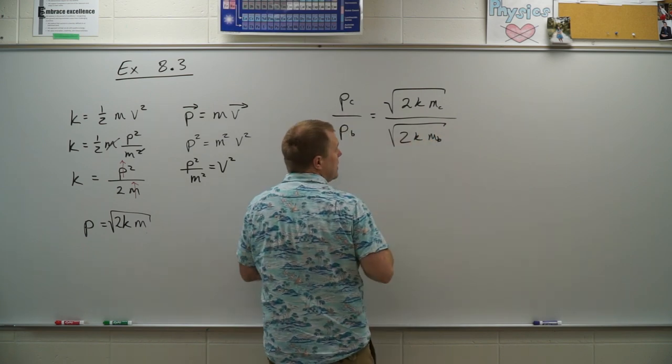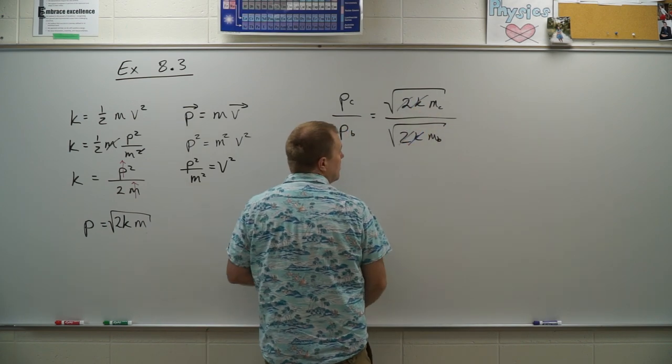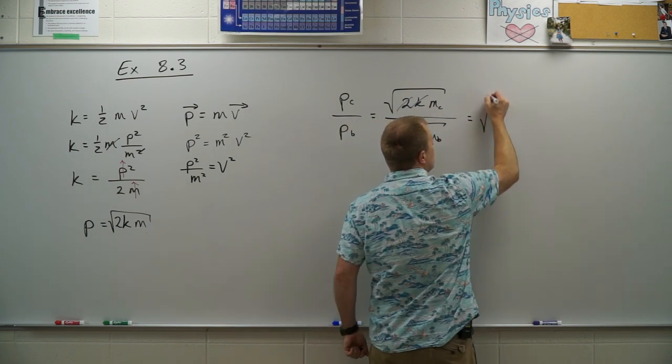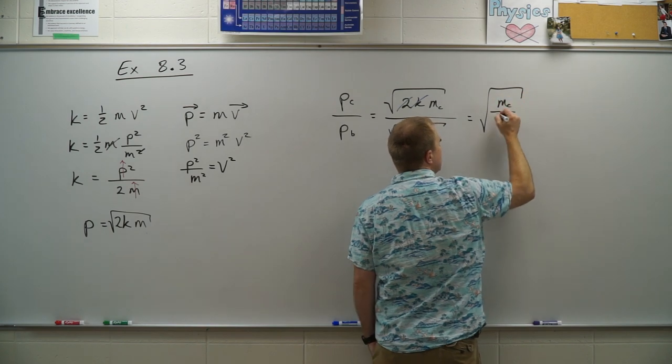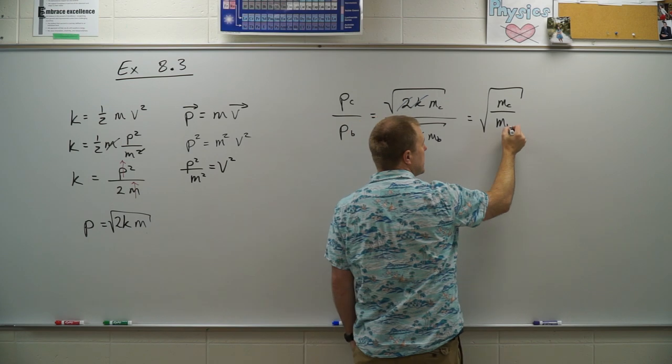At this point they have the same kinetic energy, the twos cancel as well. So I'm left with the square root of mc divided by mb. Now I just need to use those two numbers they gave me here.